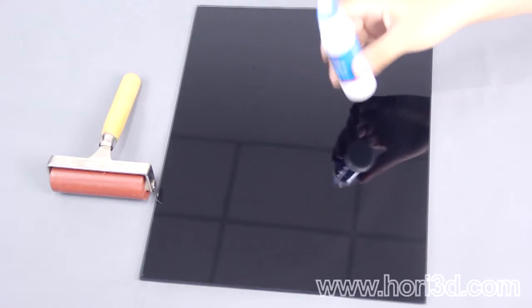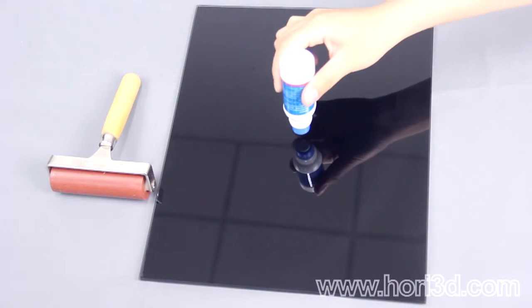Next, drip enough glue into the middle of the glass plate to evenly cover the entire plate.